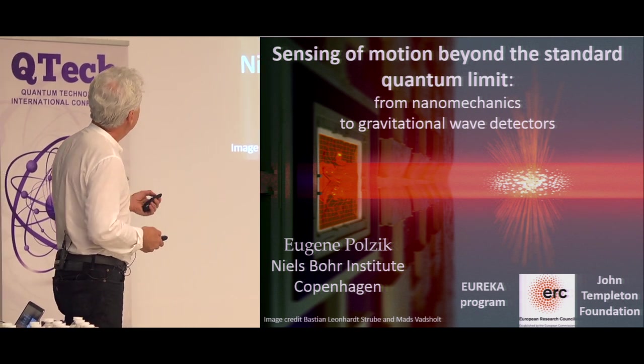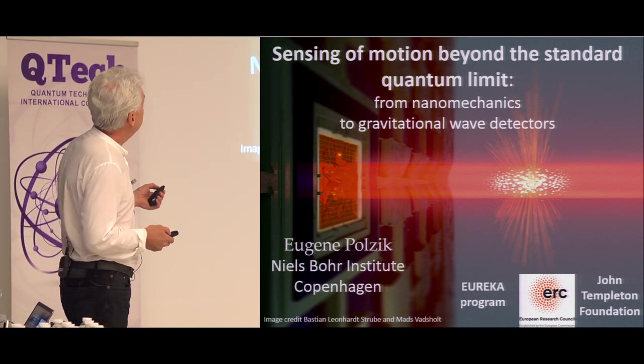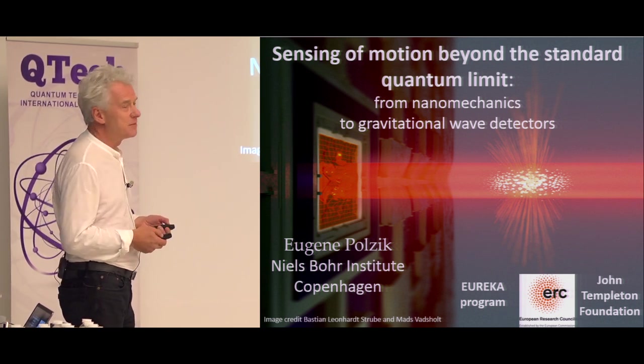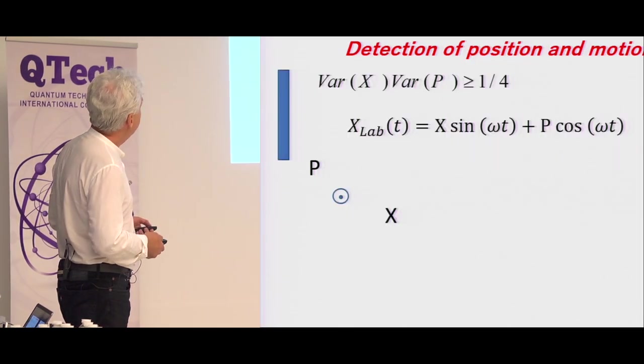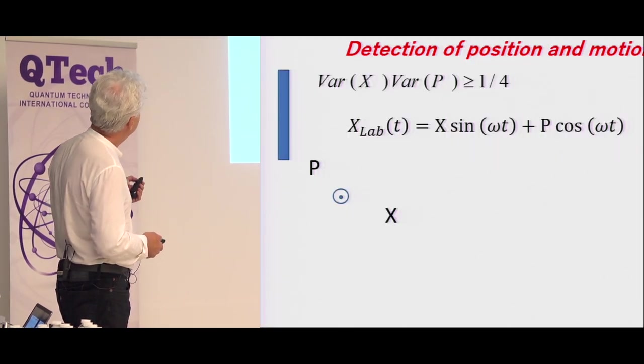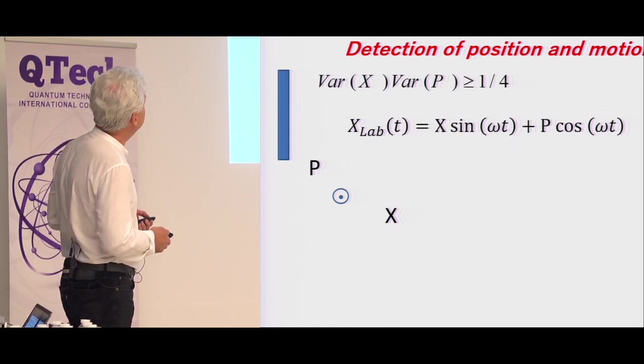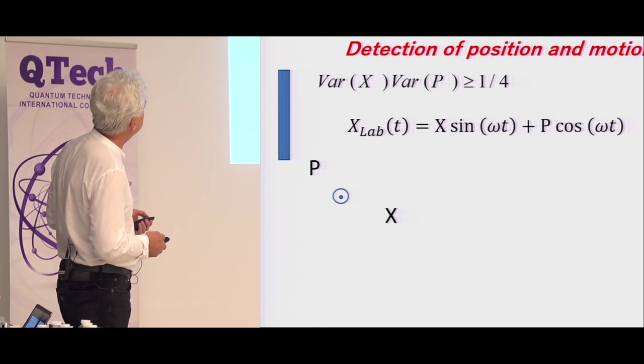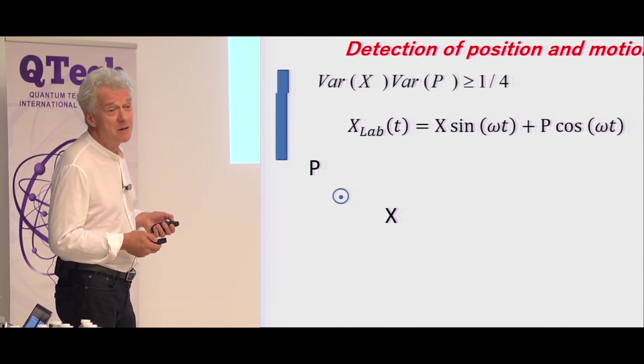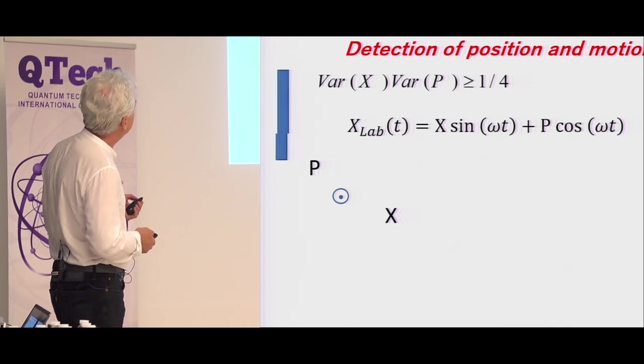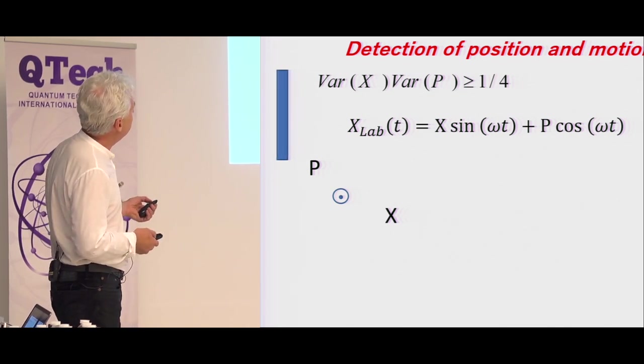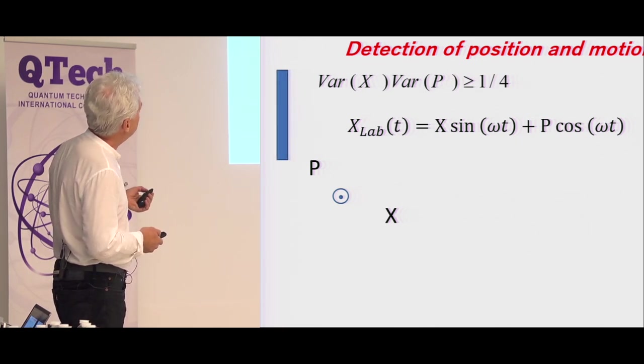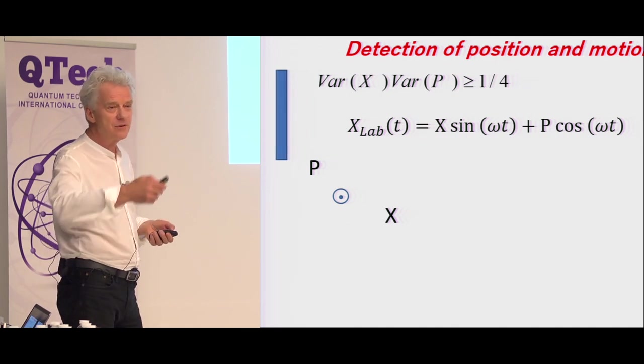So that's the title. You notice here also the gravitational waves, which seem to be the motto of today's first session. The Heisenberg uncertainty in dimensionless units is if you want to measure a position of an oscillating mirror, for example, an oscillating object.